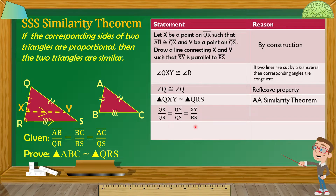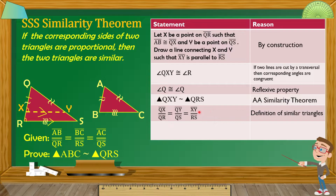Yung reason natin dyan is by definition of similar triangles. Kapag sinabi natin similar triangles, all corresponding angles of two triangles are congruent, and at the same time yung mga corresponding sides ng dalawang triangle na yun ay proportional. Yan yung definition of similar triangles.